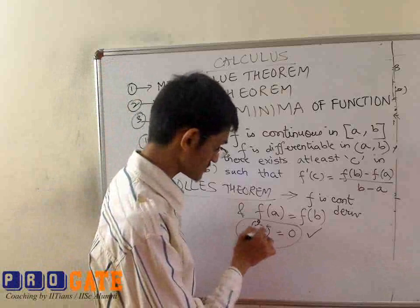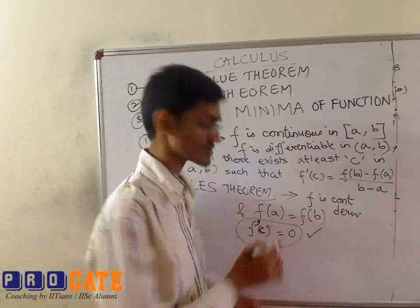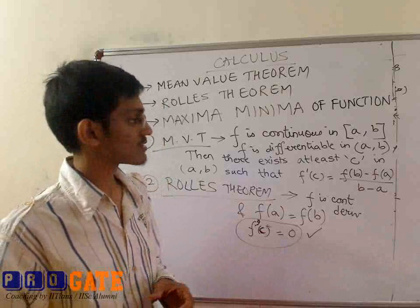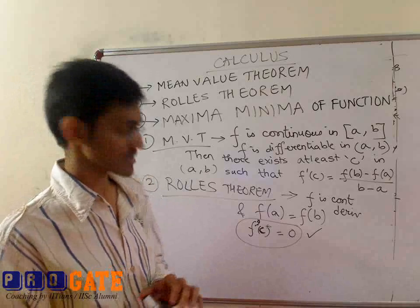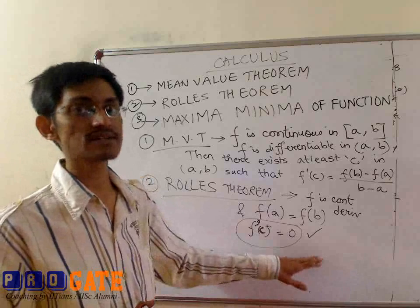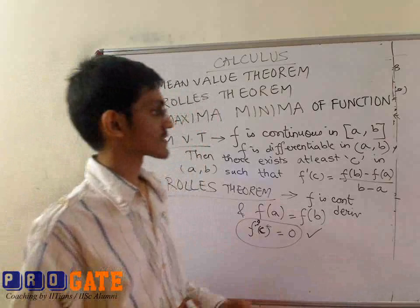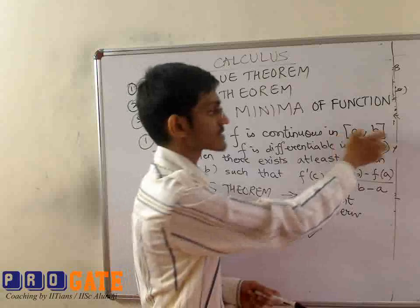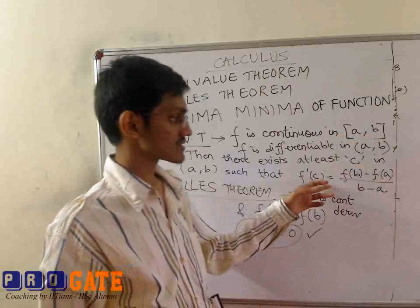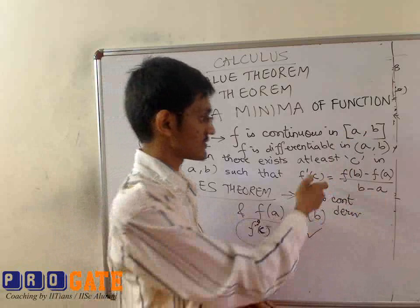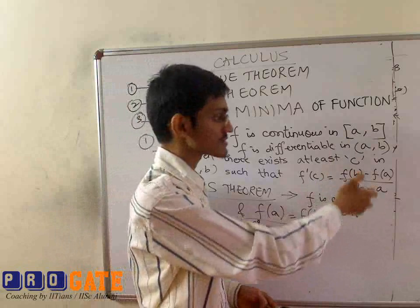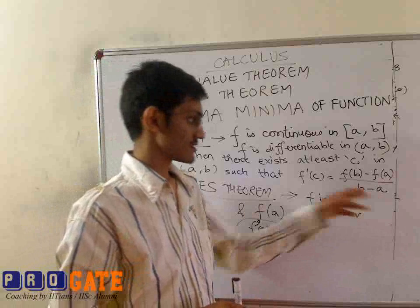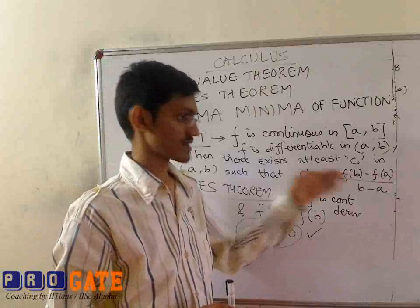Now, this f'(c) equal to zero would be useful because if your first-order derivative is equal to zero, that means you have some optimum point — it may be a maxima or minima of a function. That would be obtained through the second-order derivative test. So the necessary condition for a point to be optimal is f'(c) equal to zero. You can have sums based on this: a function is given within an interval [a, b], you evaluate f'(c), or find the point at which f'(c) equals f(b) minus f(a) upon b minus a. Since you have the function f'(x), you know f'(c) — equate that and get the respective x.